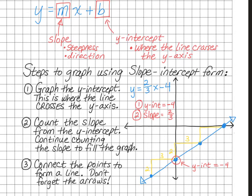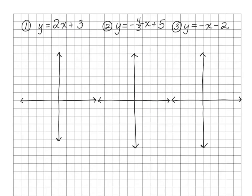Pause the video and make sure you are caught up with your notes before we go on to more examples. Please pause the video and write these 3 problems down, along with graphs to graph them on. Let's take a look at number 1: y equals 2x plus 3. Remember, the first step is to graph the y-intercept — the number that is not with the x. In this case, our y-intercept is 3. So I start at the origin, the y-intercept crosses the y-axis, and I count up to 3. My y-intercept is here at 3, so I'm going to put a point there.